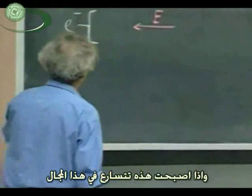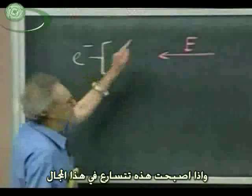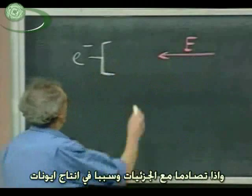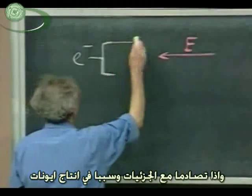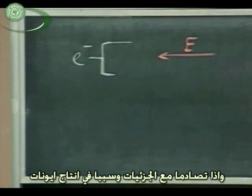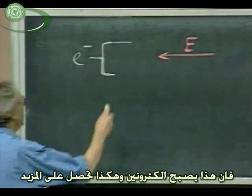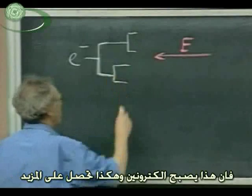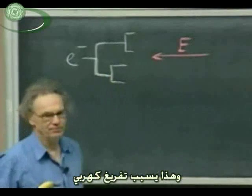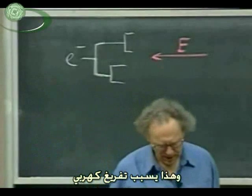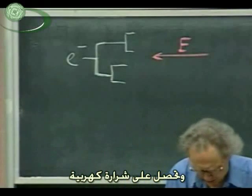And if these electrons now start to accelerate in this electric field, and if they collide, each electron can become two electrons. So you get an avalanche, and this avalanche is an electric breakdown. And you get a spark.